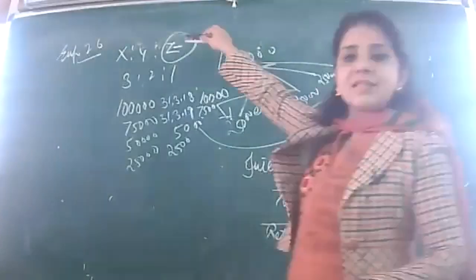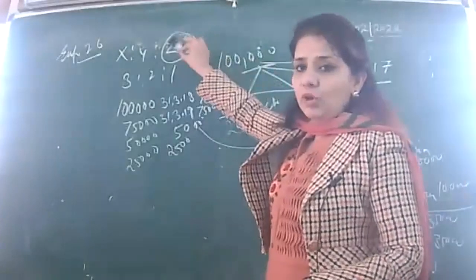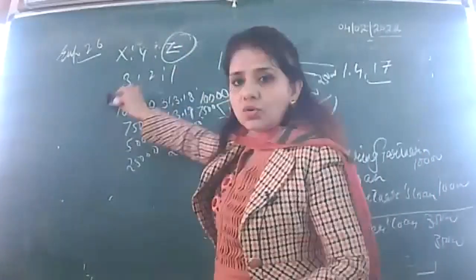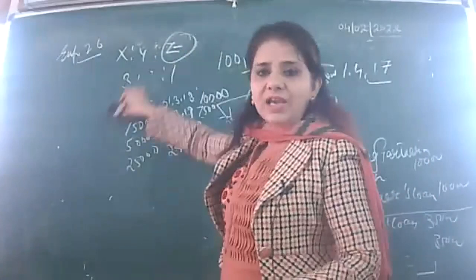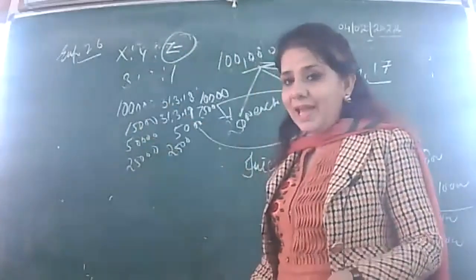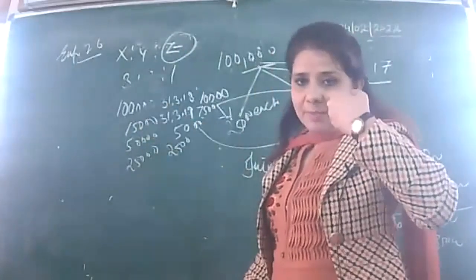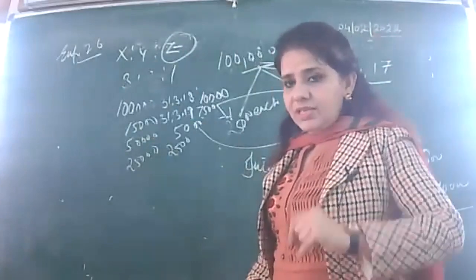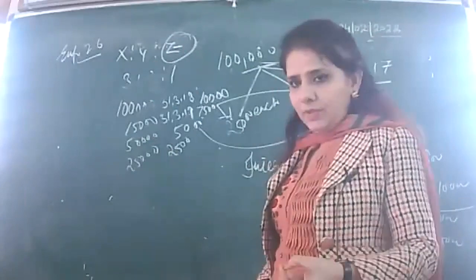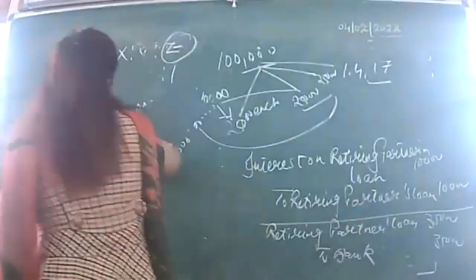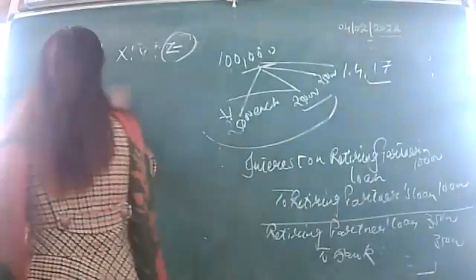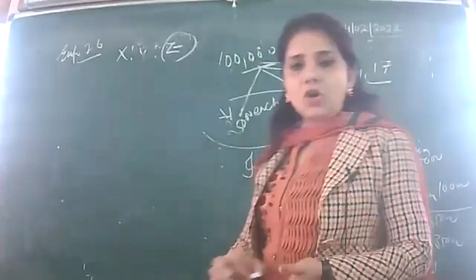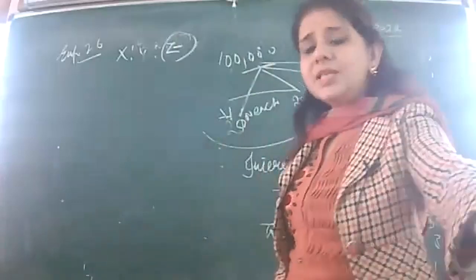Z is retiring so we call it Z's loan account. From Z's capital, the transfer entry is: Z's capital account debited to Z's loan account. In Z's loan account, write 'by Z's capital'. Each year interest is debited and posted. Year 1 closing: 31st March 18 — by interest 10,000, payment 35,000; balancing figure 75,000.